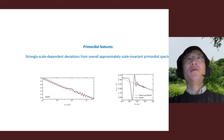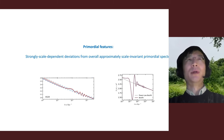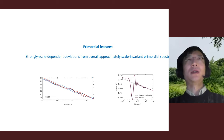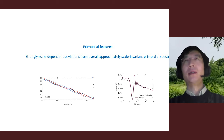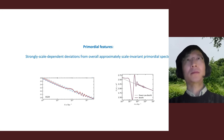What are primordial features? From experiment we know the density perturbations we observe from CMB and large-scale structures are possibly scale invariant. Primordial features are some strong scale-dependent deviations from this overall picture. These are two random examples of what the features might look like. They are typically subdominant because the scale dependence is very strong — otherwise you would break the scale invariance.